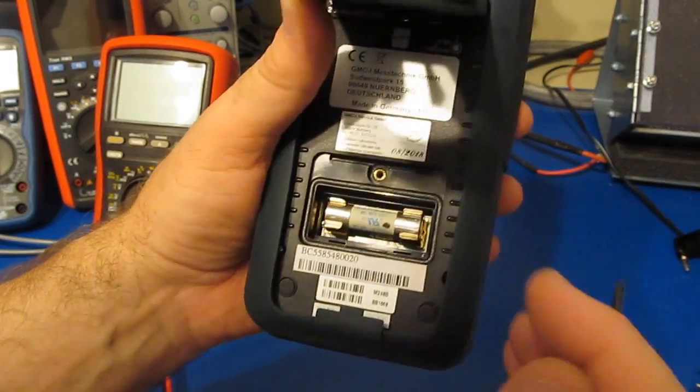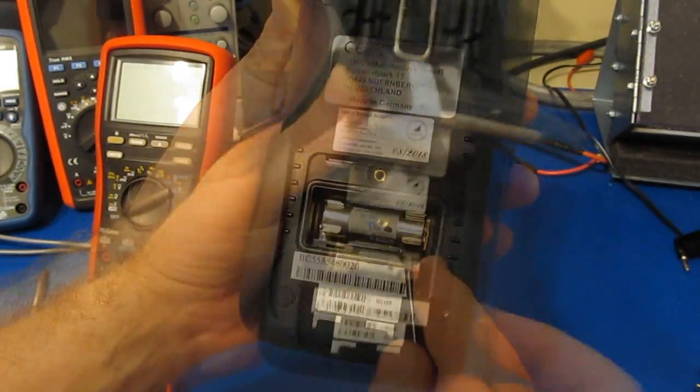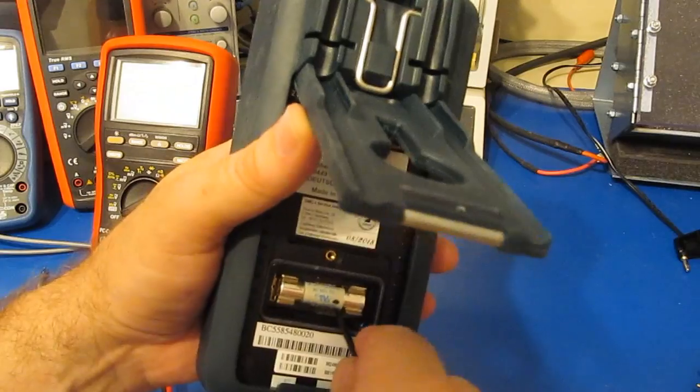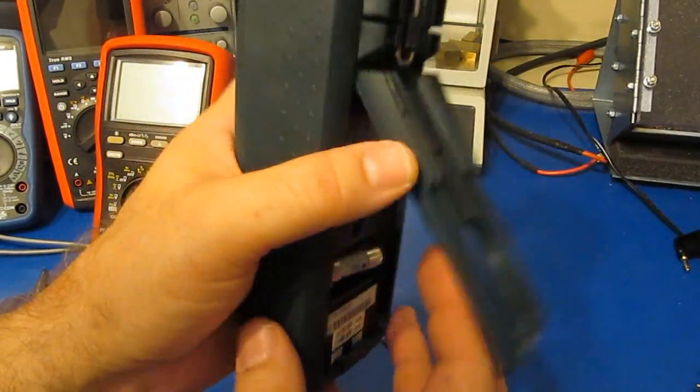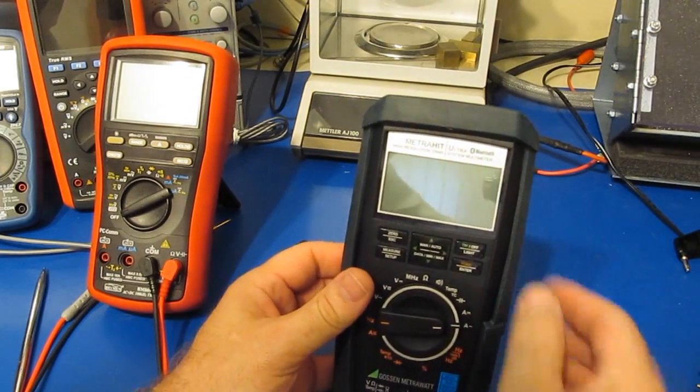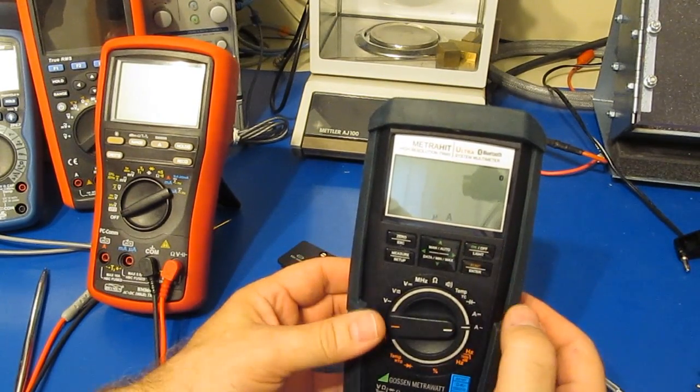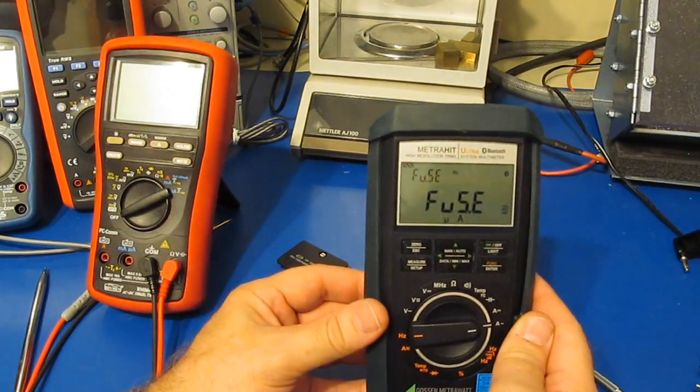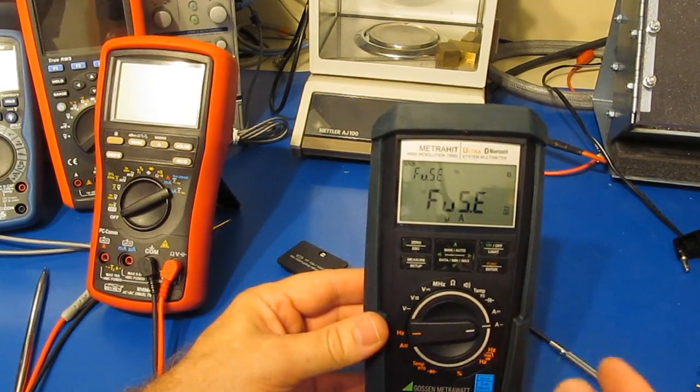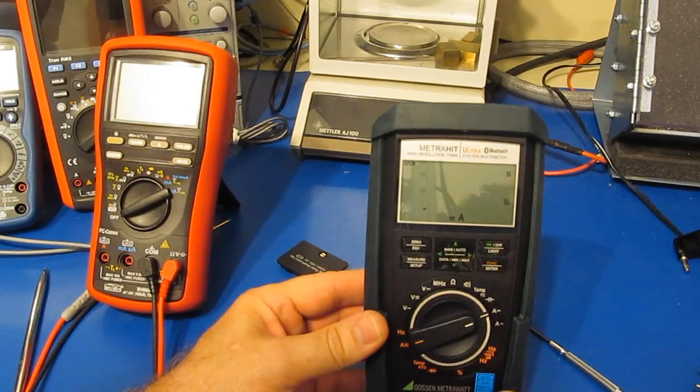So if the fuse were removed - I won't actually take it out, we'll just kind of leave it in there - and I were to turn on the meter, you can see it displays 'fuse' meaning that the fuse is blown. And it'll do the same thing in the DC current range.